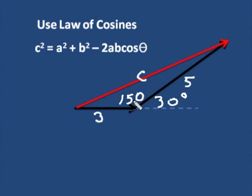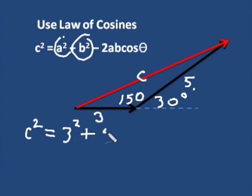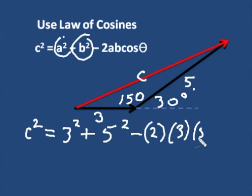So now we can put all of this through that equation, and I would suggest you hit pause and try it first. So c² = 3² + 5² - 2(3)(5)cos(150°). Make sure you know how to use your calculator and put all of this through. Remember to take the square root. A lot of people forget to do that, and you get an answer.